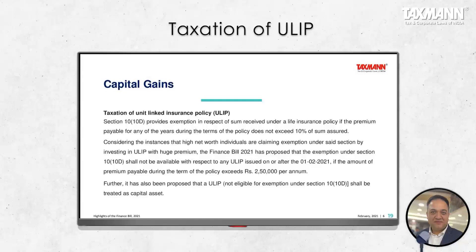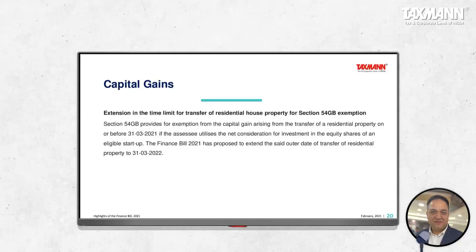That's the biggest change in capital gains — it will really impact ULIP policies hard. The memorandum states that some HNIs have been investing heavily in ULIP policies, ensuring the total premium is less than 10% of the sum assured so maturity proceeds were totally exempt — functioning like mutual funds where a portion of the contribution goes to the securities market. That benefit is now significantly curtailed.